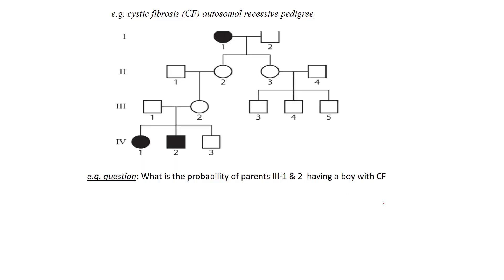Okay, so let's get right to the question. What is the probability of parents 3-1, this one right here, and 3-2 having a boy with CF? If they had another child, what would be the probability of them having a boy? Well, first of all, we know that would be one-half. Okay, so now we have to do the other part, the CF.